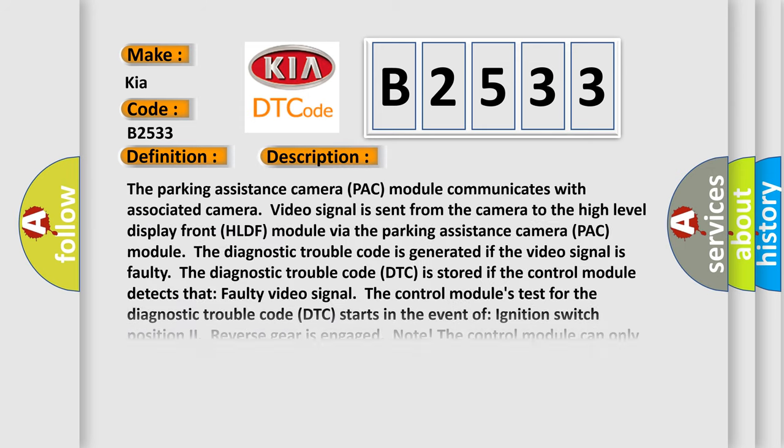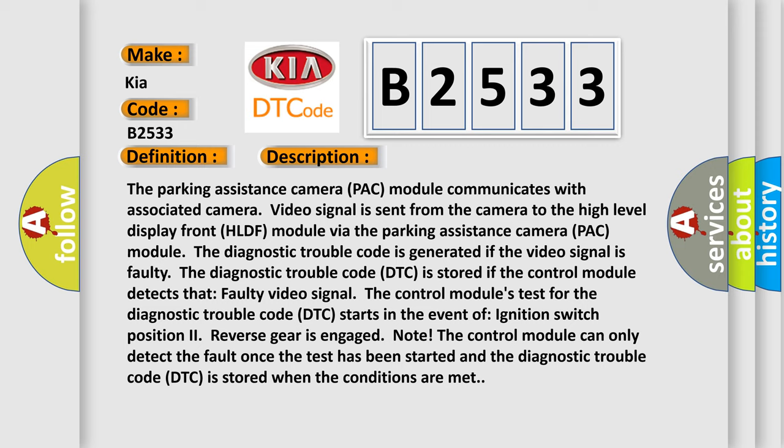And now this is a short description of this DTC code. The parking assistance camera PAC module communicates with associated camera. Video signal is sent from the camera to the high level display front HLDF module via the parking assistance camera PAC module. The diagnostic trouble code is generated if the video signal is faulty.